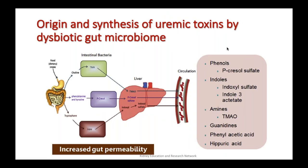We have heard a lot about uremic toxins, known for at least 30–40 years. But until we understood the gut microbiome well, we did not really understand the source of uremic toxins, although it was said they originate in the gut. Now we understand better that from food you have substrates such as choline, phenylalanine, tyrosine, and tryptophan — many of these are amino acids — and they are broken down by intestinal bacteria into products like indole and p-cresol, then metabolized in the liver and released into circulation. So you have phenols, indoles, amines, guanidines, phenylacetic acid, and hippuric acid — all facilitated by increased gut permeability.